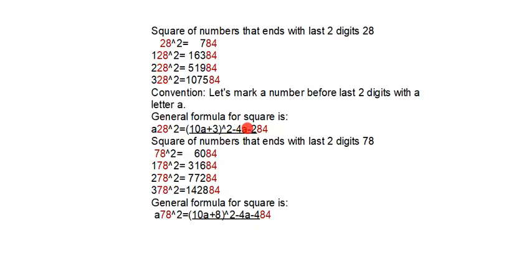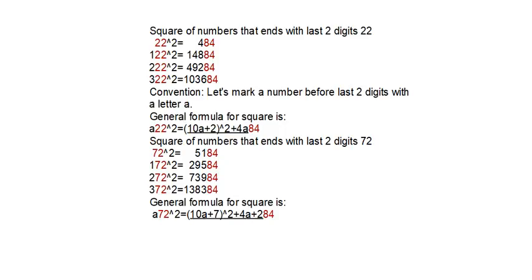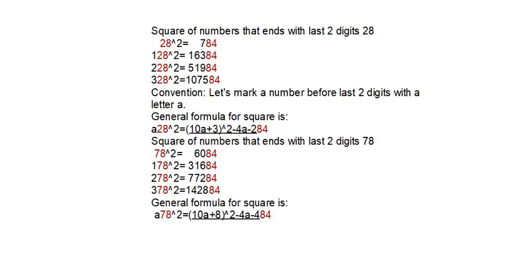Minus sign after the quadratic equation. Here is the plus sign. And at the end, here is the general formula for the square of numbers with the last two digits 78. As you can see, here is the minus sign.